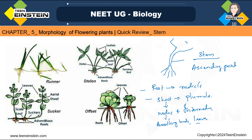The shoot system has nodes and internodes. What is a node? A node is the region where axillary buds or leaves arise. Axillary buds and leaves all arise from nodes. What is an internode? Internode is the region between two nodes — the space between two nodes is called the internode.